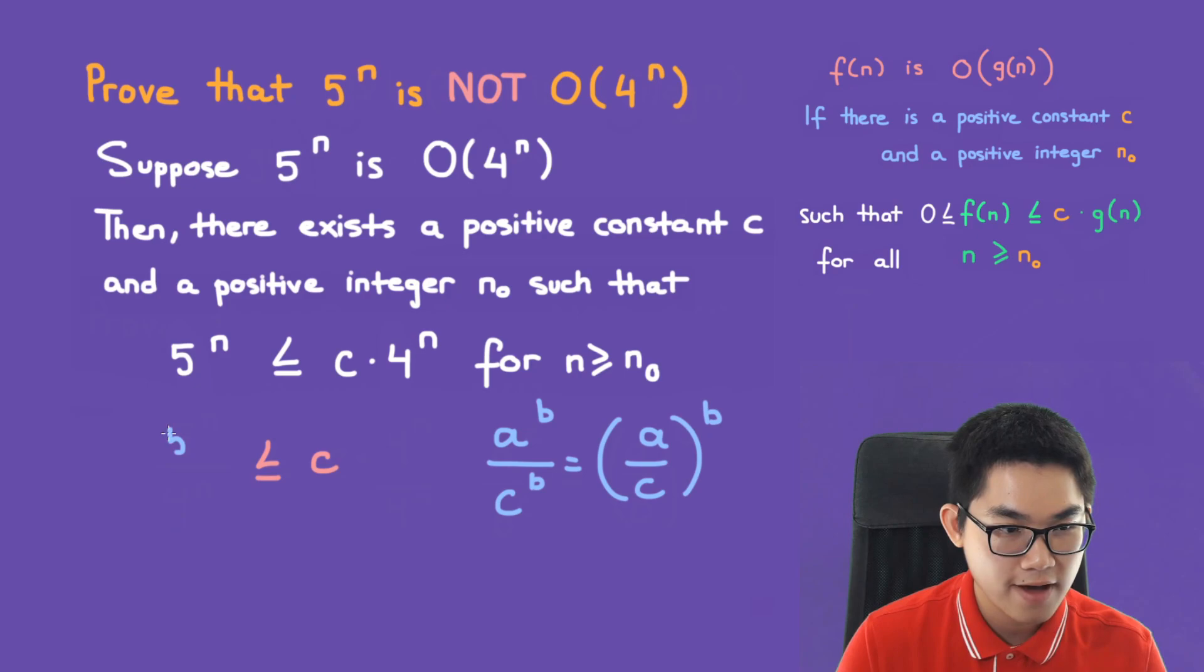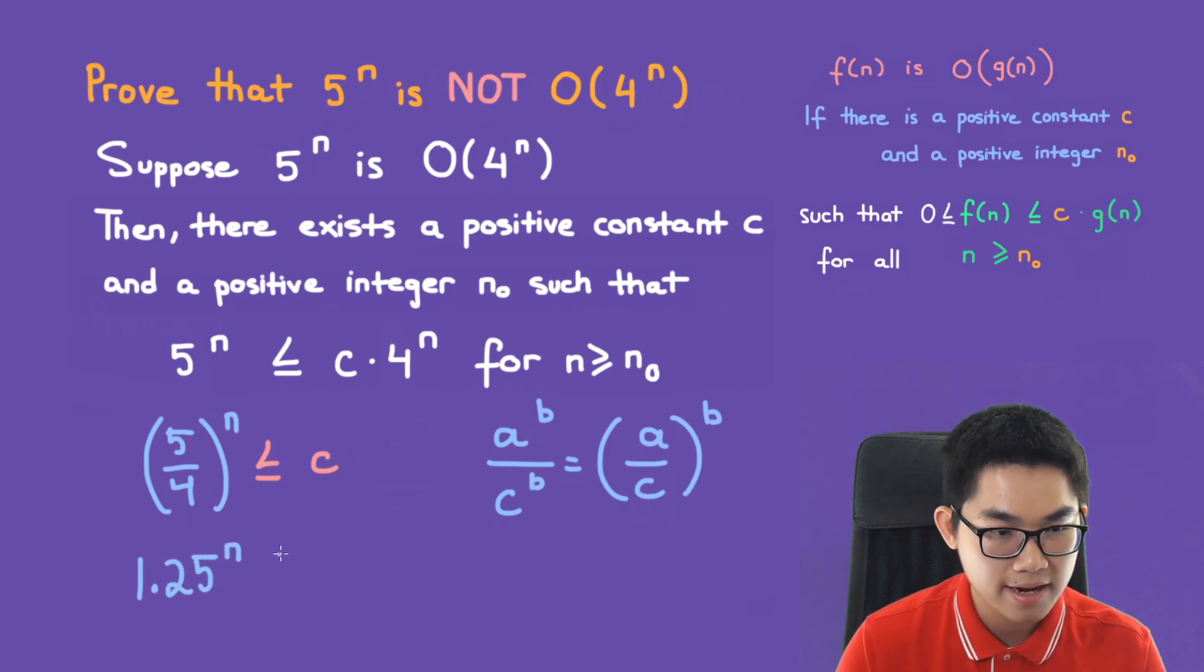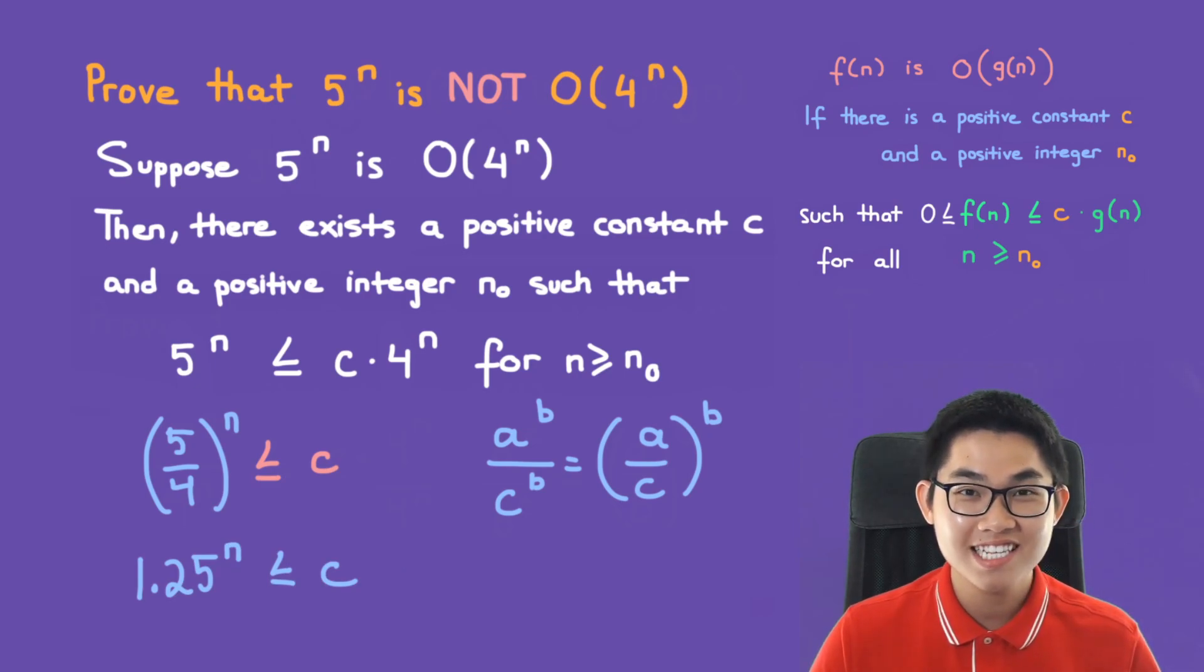We have 5 over 4 to the power of n, and 5 over 4 is just 1.25 to the power of n, and that is less than or equal to c.